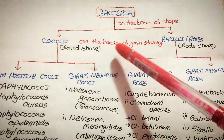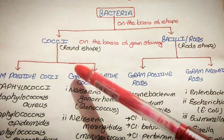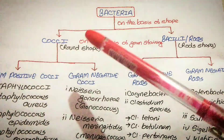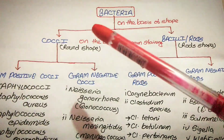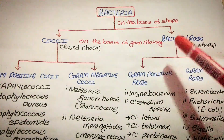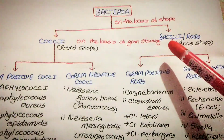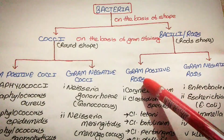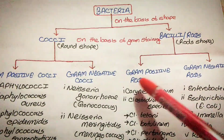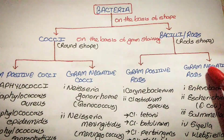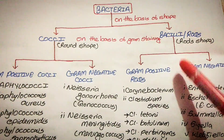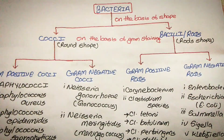Cocci and bacilli are further divided into two types on the basis of Gram staining. For cocci: one is gram-positive cocci and another is gram-negative cocci. Bacilli is also classified into two types: gram-positive bacilli or rod, and gram-negative bacilli or rod.